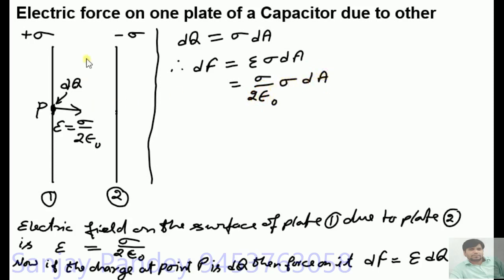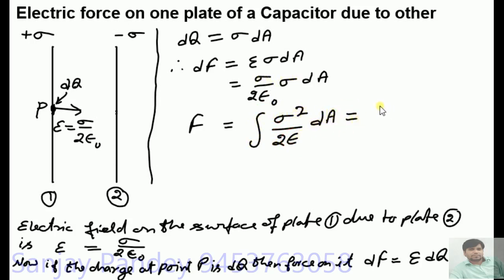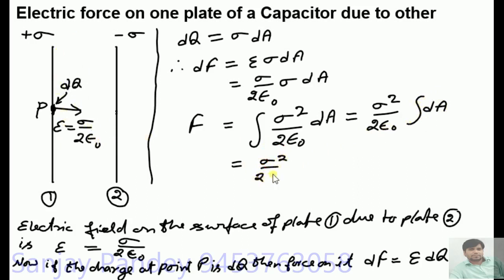Now the net force on plate 1 due to plate 2 will be F = ∫dF = σ² / (2ε₀) · ∫dA. Since σ² and 2ε₀ are constants, this becomes F = σ² / (2ε₀) into the integration of dA, which is the total surface area of plate 1.